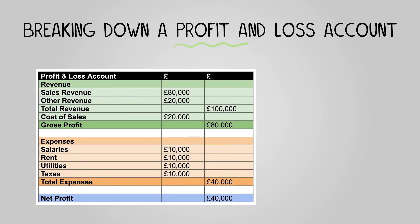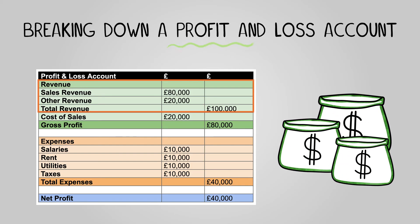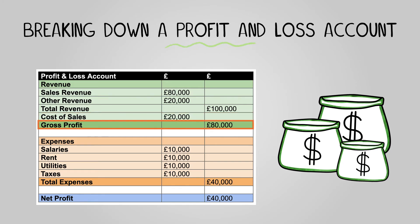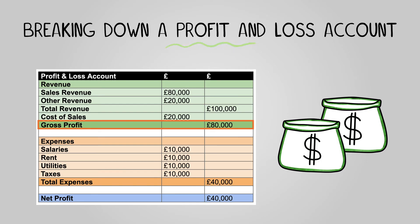Here are the main components you'll come across. Revenue: think of this as the income the business brings in, primarily through sales of products or services. Cost of sales: these are the direct costs linked with producing or delivering what the business sells, like materials or production staff wages. Gross profit: it's what remains after deducting the cost of sales from the revenue — a metric indicating production efficiency.